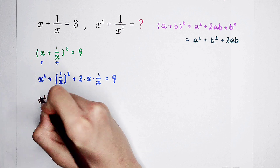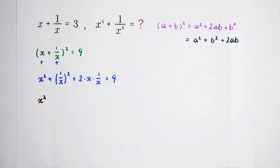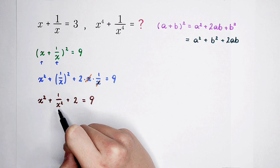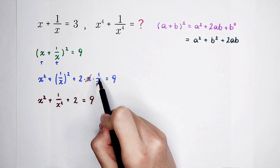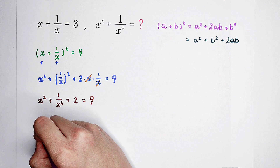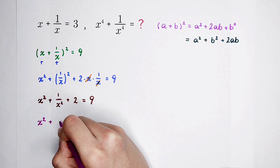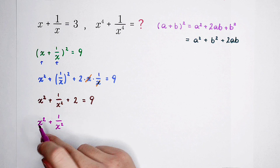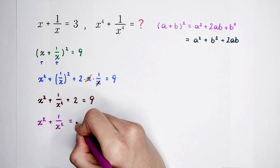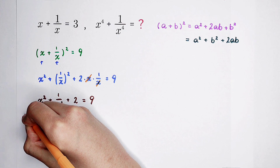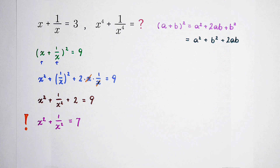x squared is here. These sections can be simplified. Since 1 over x, all squared, is 1 squared divided by x squared, and 1 squared is 1, so here is 1 divided by x squared. And plus 2 times x times 1 over x — the x's cancel out each other, so only 2 is left. Subtract 2 from both hand sides, and you get x squared plus 1 over x squared is equal to 9 minus 2, which is 7. Congratulations! We've solved for the value of x squared plus 1 over x squared successfully.